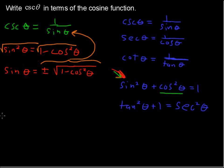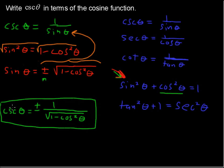So now we can rewrite this cosecant of theta equals 1 over the square root of 1 minus cosine squared of theta. And I am going to pay attention to this plus or minus, so we'll say plus or minus in front of that. And there we have the cosecant function written in terms of cosine.